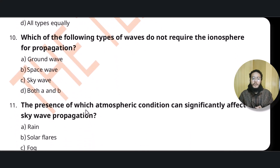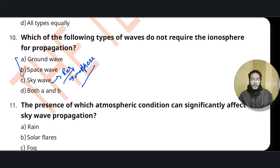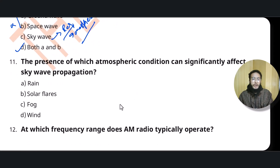Question ten: which of the following waves do not require the ionosphere? Only sky waves require the ionosphere. Ground waves and space waves do not need the ionosphere. So both ground wave and space wave will be the correct options — meaning option D (both A and B) is the correct answer.